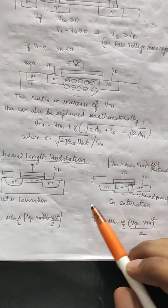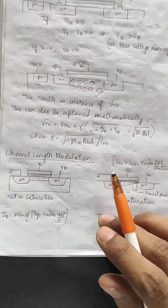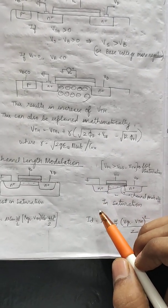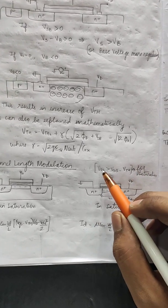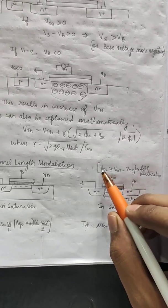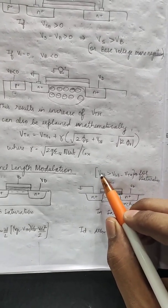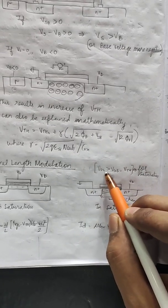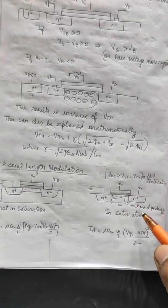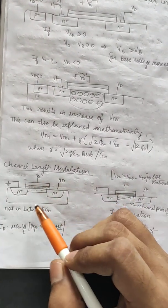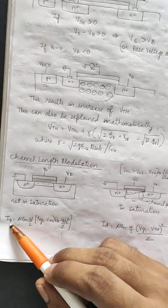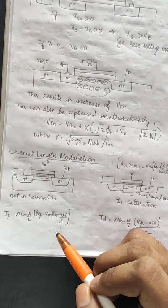Next is channel length modulation. A given MOSFET operates in various modes, and the most widely used mode is the saturation mode. The condition for saturation mode is VDS should be greater than or equal to VGS minus VTH — that is, the drain-source voltage should be greater than or equal to the gate-source voltage minus the threshold voltage. When the MOSFET is not in saturation, its current is given by a formula where the current depends upon VDS.